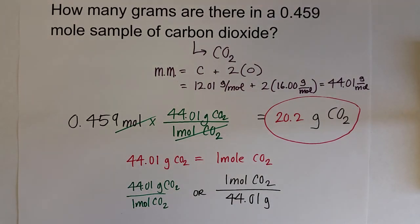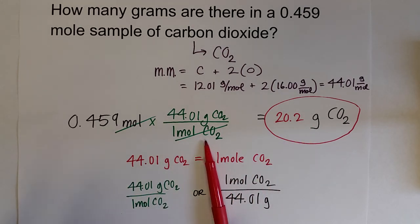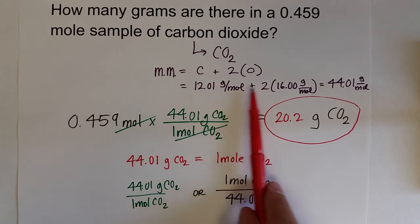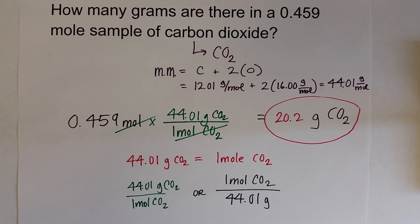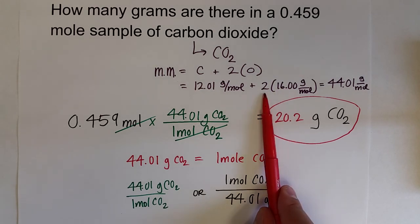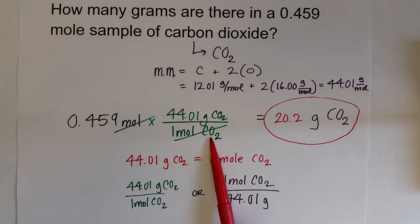In this problem, we converted moles to grams using the molar mass. Since it was a molecule, we had to calculate the molar mass — in the same exact fashion as calculating atomic mass previously — by adding the molar mass of each element and multiplying by the number of each atom in the molecule or ionic compound. Then we determined which conversion factor to use to convert from moles to grams.